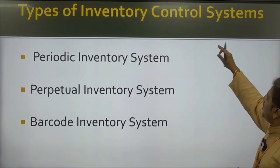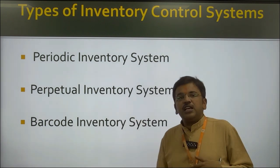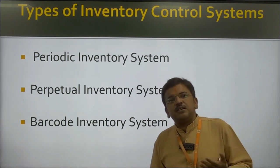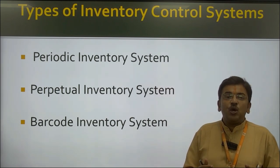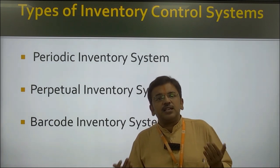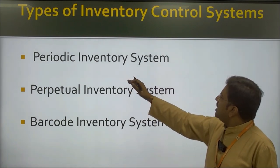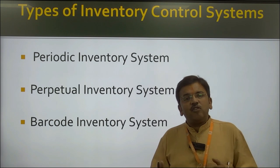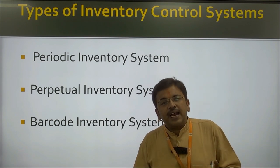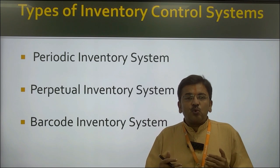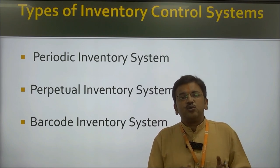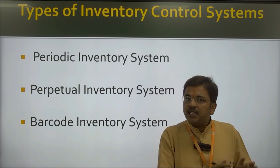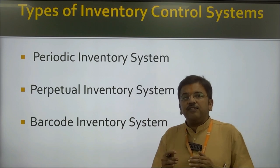There are three types of inventory control system. The first is the periodic inventory system. Periodic inventory system means whenever we produce things based on seasonal or cyclical conditions, we need a periodic inventory system. Every six months or every quarter we give orders for materials. Whenever we distribute and give orders on a quarterly, half-yearly, monthly, or yearly basis, we call it a periodic inventory system.